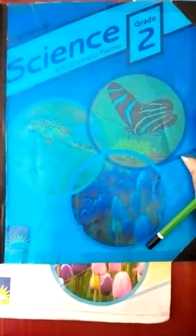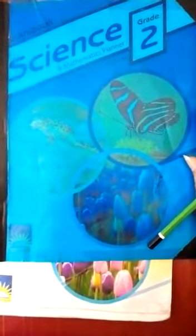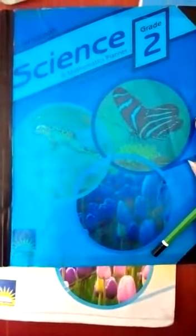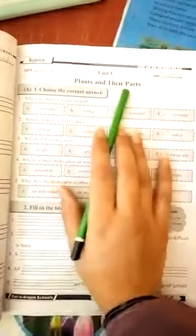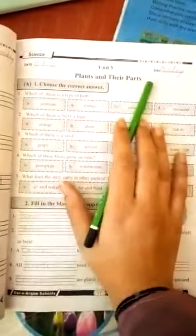Bismillahirrahmanirrahim, assalamu alaikum. I hope all of you are fine and staying safe. Today we are studying science workbook class 2, page number 17. So today we are starting the workbook of unit 3, plants and their parts. I hope you have read the chapter.